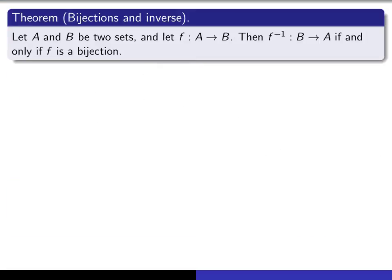The theorem is a biconditional statement. It says that if f inverse is a function from B into A, then it must be the case that f is a bijection. And it also says that conversely, if f is a bijection, then f inverse must be a function from B into A. So let's begin by proving the forward direction: assuming that f inverse is a function from B into A, then f is a bijection.